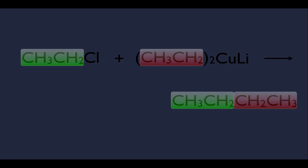A quick way to get to the product: look at your alkyl halide and simply replace the halogen — in this case Cl — with whatever is in the parentheses of the Gilman reagent. We'll see this method applied again later.